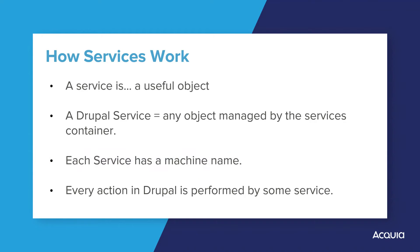It gets better. Everything that Drupal does is actually done by one of the services in the container: the reading of configuration, the execution of the routing, the handling of the cache, registering themes and modules, logging errors, reading and writing from the database — these are all done by various services, and you have access to them all. You can use these services at any time. You can even override and replace any core service you want to, or you can create your own.